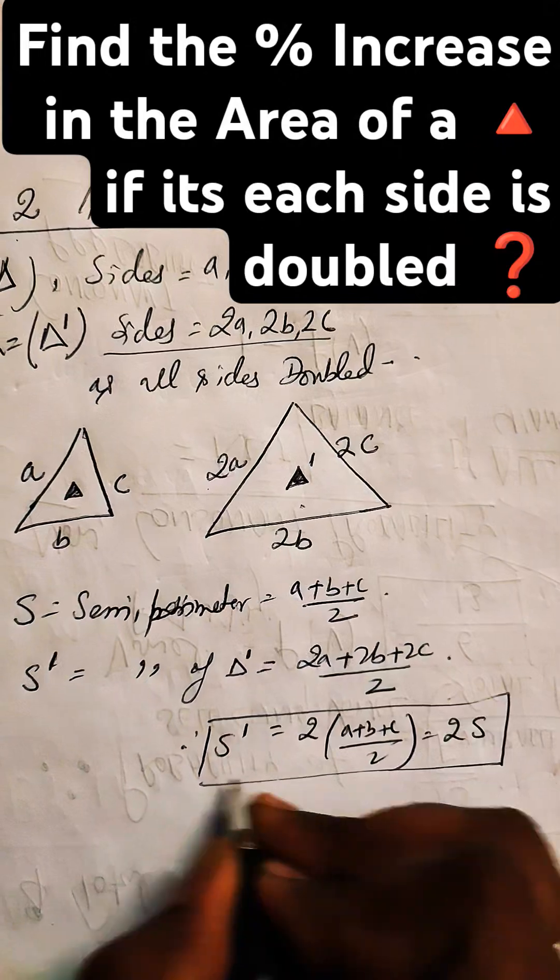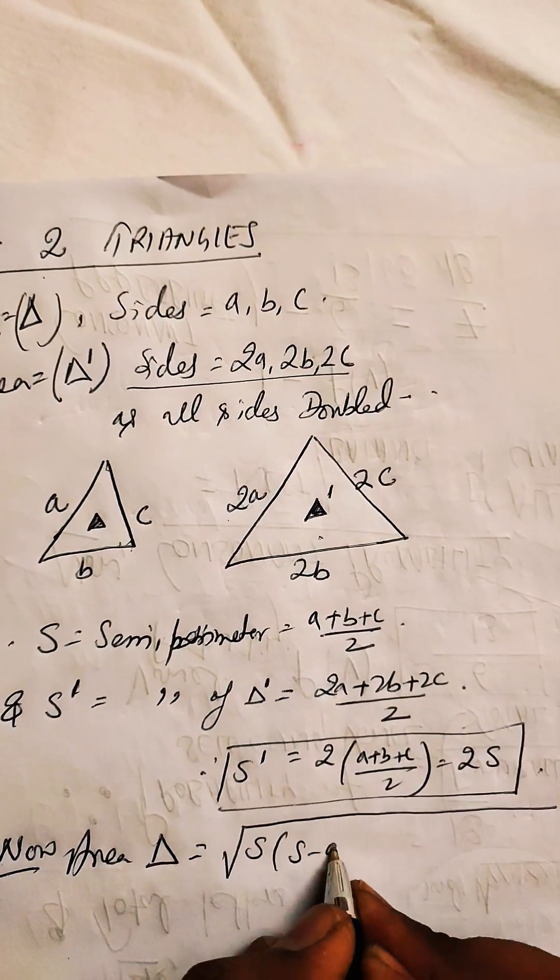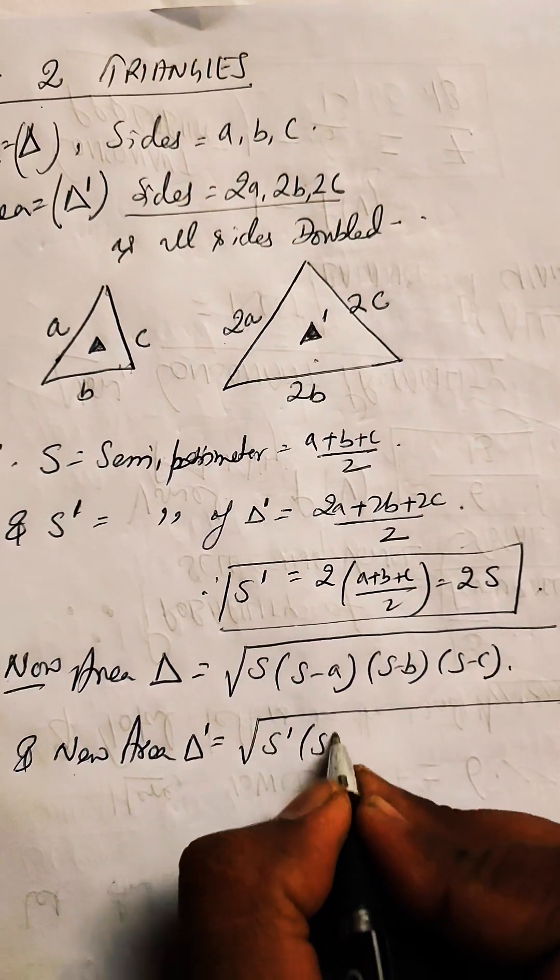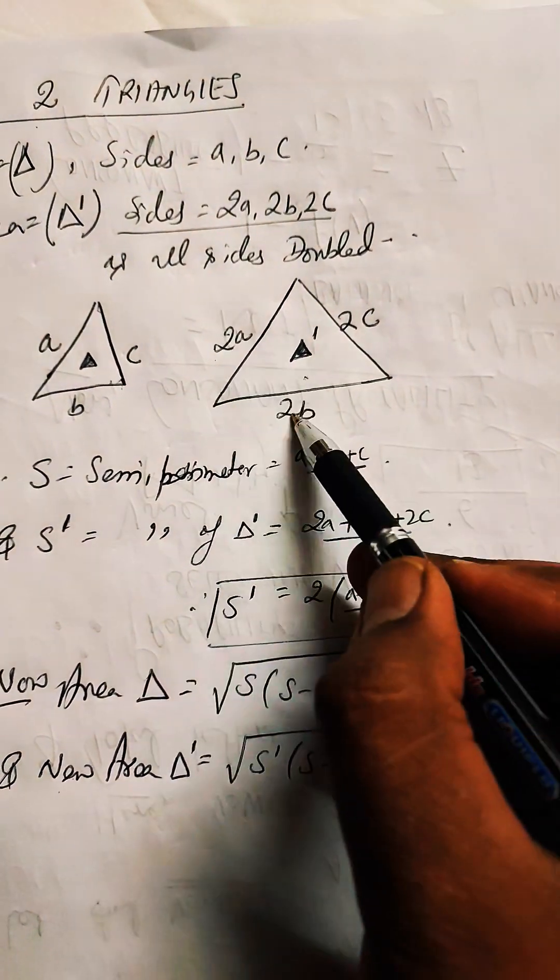Putting this into the formula, the area of the triangle is √[S(S-A)(S-B)(S-C)], and the new area is √[S'(S'-2A)(S'-2B)(S'-2C)].